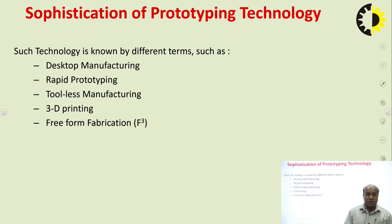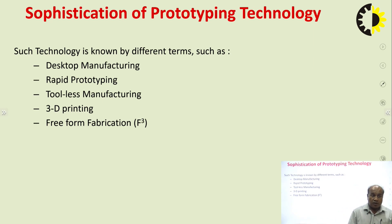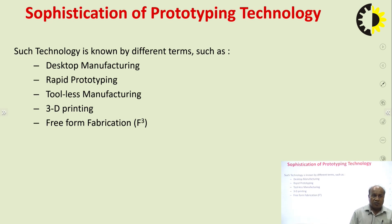On the basis of sophistication of prototyping technology, we can refer to this technology by different names such as desktop manufacturing, rapid prototyping, toolless manufacturing, 3D printing, free-form manufacturing, and layer manufacturing. These are the different names for this prototyping technology.